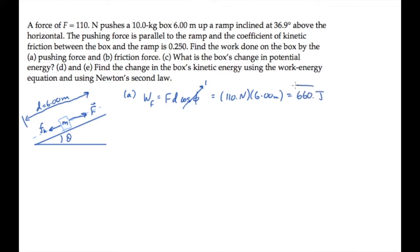Part B asks for the work done by the friction force. The friction force is constant as the block moves up the ramp, so that work is the force times the distance times cosine of the angle between those two vectors. The displacement is up the ramp while the friction force is down the ramp, so the angle theta f between them is 180 degrees, and cosine of that is negative 1.